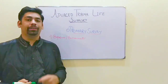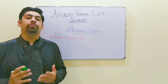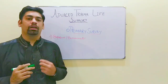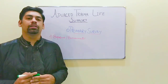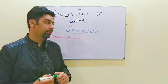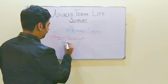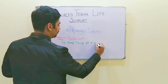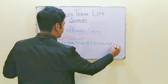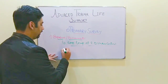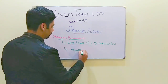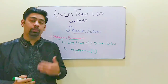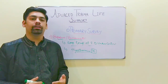The final component of the primary survey is exposure and environmental control. In this, we have to maintain the environment or the temperature of the emergency room, as the patient might be hypothermic. We keep the surrounding environment warm and provide the patient with blankets to maintain body temperature at a normal level, preventing hypothermia from developing in the patient.